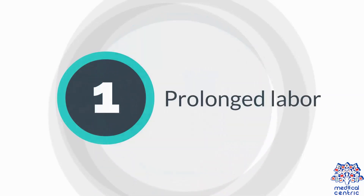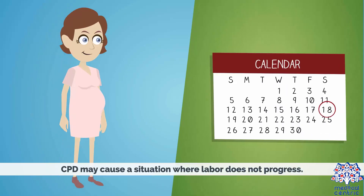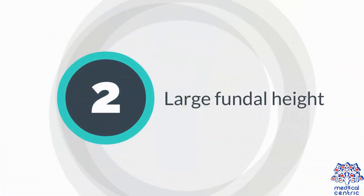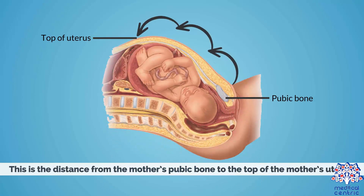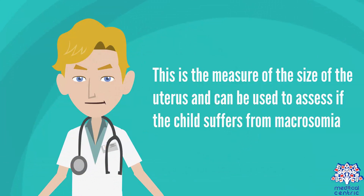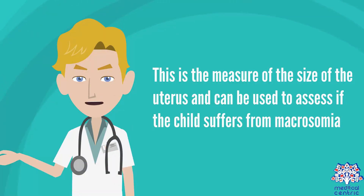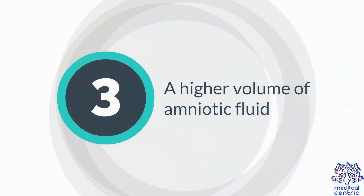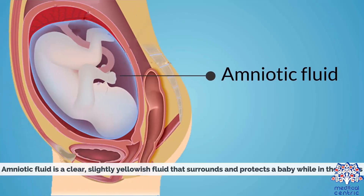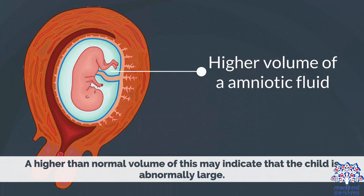Symptoms of CPD include prolonged labor, where labor does not progress. A large fundal height — the distance from the mother's pubic bone to the top of the uterus — can be used to assess if the child suffers from macrosomia. A higher-than-normal volume of amniotic fluid, the clear, slightly yellowish fluid that surrounds and protects the baby in the uterus, may also indicate that the child is abnormally large.